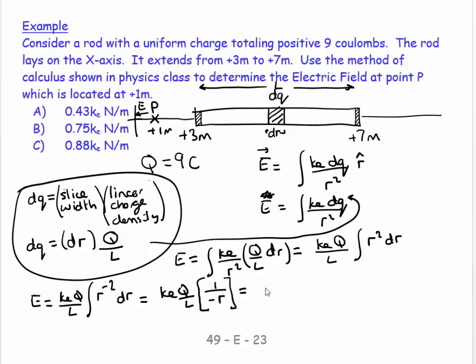And this is going to equal ke for q. I know the value of q is 9. And then for l, I know the value of l is going to be 7 minus 3, which is 4. And then, oh, my limits. So here's a bit of a sticking point for people.